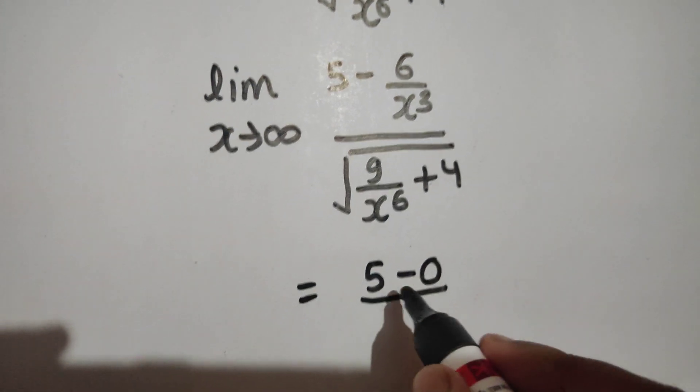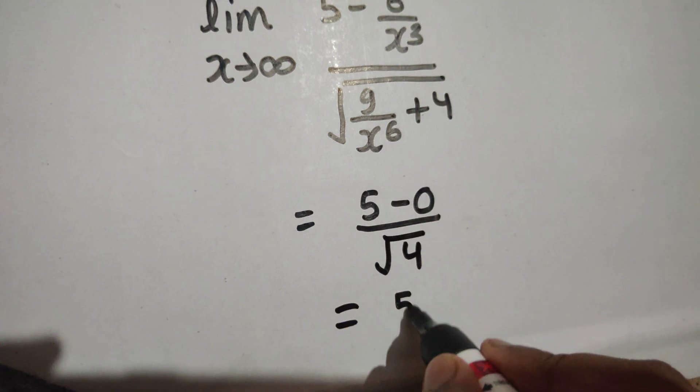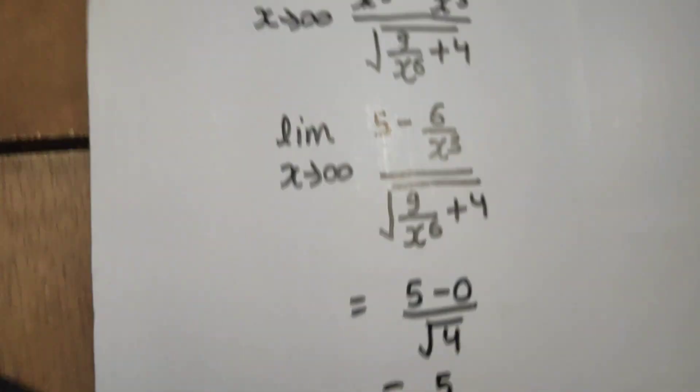You will get √4. √4 is nothing but 2. 5/2 is our final answer.